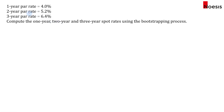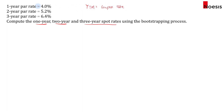Let's say we have a one-year par rate of 4%, a two-year par rate of 5.2%, a three-year par rate of 6.4%, and we are required to compute the one-year, two-year, and three-year spot rates using the bootstrapping process. What the par rate indicates is that the bond's yield to maturity is the same as the coupon rate.